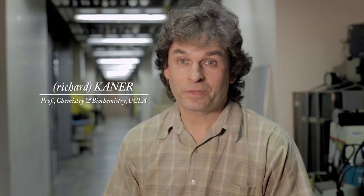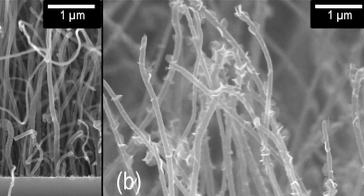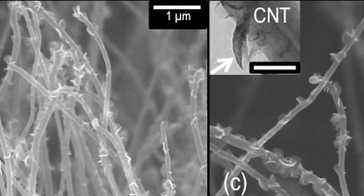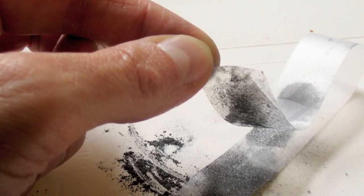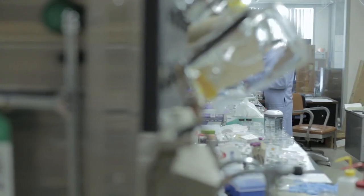Graphene is a single layer of carbon. It's one of the strongest materials ever known and it's completely flexible. The discoverers of graphene won the Nobel Prize in 2010. However, the method they used to make it, which was taking graphite and peeling it with Scotch tape, is not practical. So we set out to find a better method.